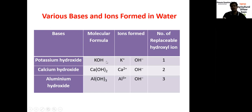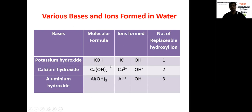Potassium hydroxide (KOH) in ionic state gives K+ and OH- ions; the number of replaceable hydroxyl ions is only one. Calcium hydroxide, Ca(OH)2, forms Ca2+ and 2 OH- ions; the number of replaceable hydroxyl ions is two. Aluminum hydroxide, Al(OH)3, ionizes in water to form Al3+ and 3 OH- ions; the number of replaceable hydroxyl ions is three.